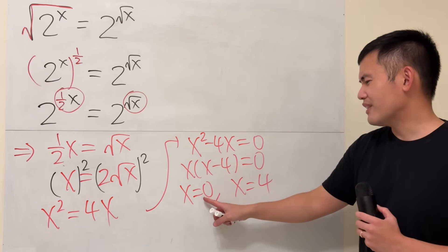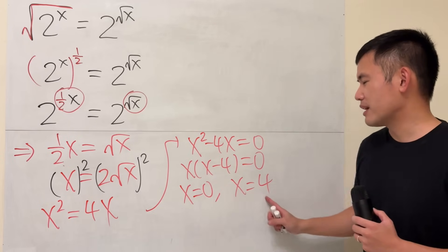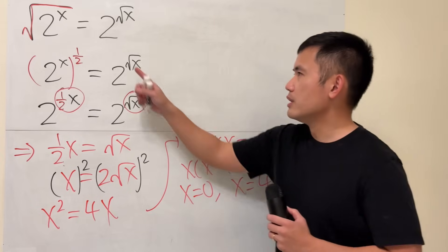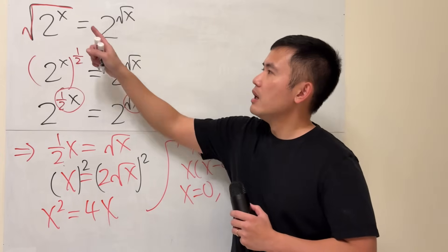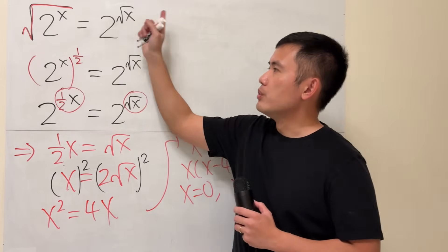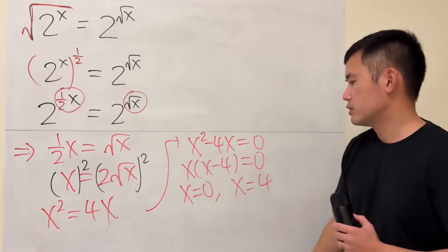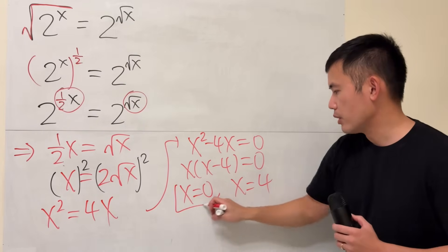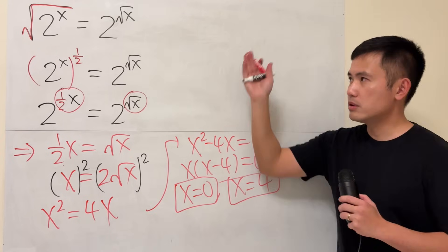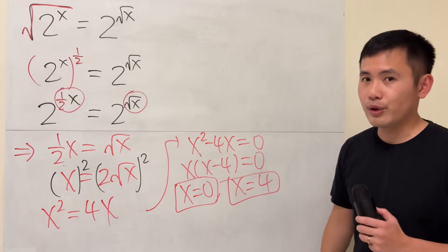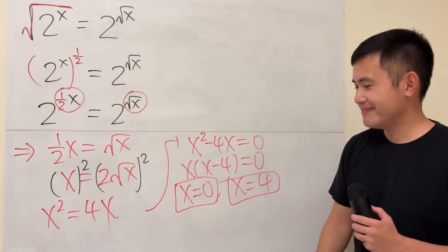We should also have a good habit of plugging the values back into the original equation to check. They do work, so both x equals 0 and x equals 4 are solutions to that equation. That's it.